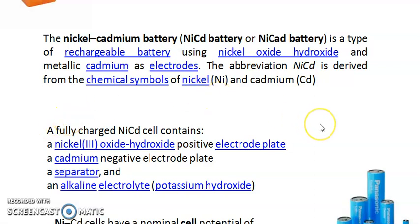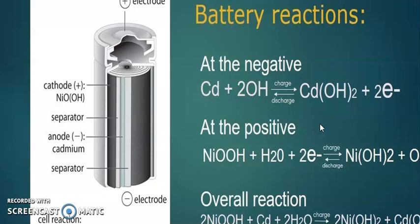Sometimes you can also use sodium hydroxide — in general we call it an alkaline electrolyte. The potential developed in this nickel cadmium battery is around 1.2 volts, which is less than the normal alkaline cell. The anode is cadmium, the cathode is nickel oxide hydroxide, and there is a separator with potassium hydroxide as the electrolyte.